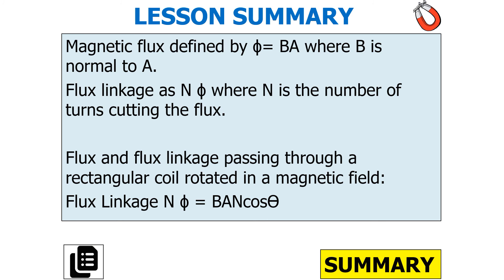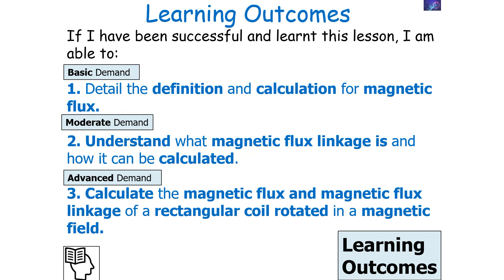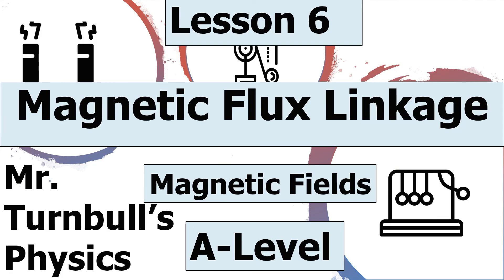So, what have we learned in today's lesson? Magnetic flux is defined by the equation Φ = BA, where B is normal to A. Flux linkage is NΦ, where N is the number of turns cutting the flux. Flux and flux linkage passing through a rectangular coil rotating in a magnetic field are given by the equation: flux linkage = NΦ = BAN cos θ. We should now be able to detail the definition and calculation for magnetic flux, understand what magnetic flux linkage is and how it can be calculated, and calculate the magnetic flux and magnetic flux linkage of a rectangular coil rotated in a magnetic field. I hope you've enjoyed today's lesson on magnetic flux linkage in the magnetic fields topic of AQA A-level physics. Thank you very much for listening, and have a lovely day.